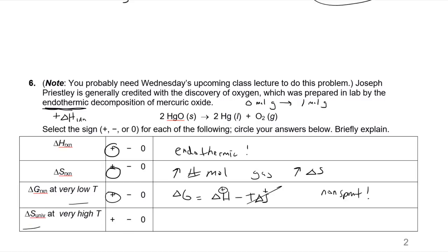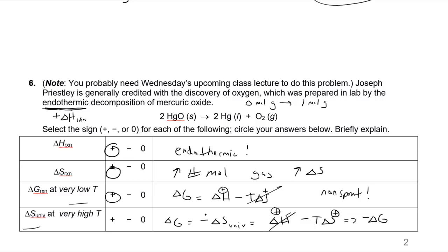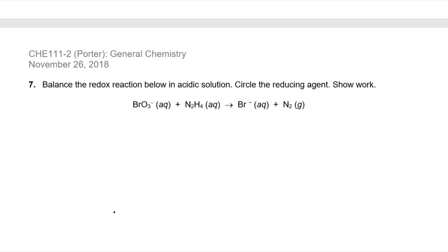Delta S of the universe and delta G are opposite in sign. At very high temperature, the T·delta S term is large and positive, making delta G negative. Negative delta G means delta S of the universe is positive — by the second law, this means the reaction is spontaneous at high temperature. Both approaches give the same answer: spontaneous at high temperature, non-spontaneous at low temperature.